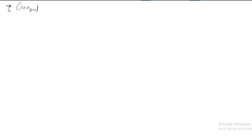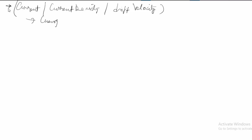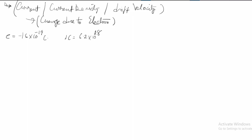In this lecture we will define the current density in terms of drift velocity, considering the charge due to the electron. The electron has a charge of minus 1.6 into 10 raised to minus 19 coulombs. And 1 coulomb of charge is produced by 6.2 into 10 raised to 18 electrons.